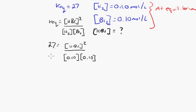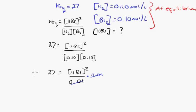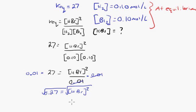We put in 27, so now this is a mathematical equation and we use a little algebra. We get HBr squared over 0.1 times 0.1, which equals 0.01. To solve, multiply both sides by 0.01 — those cancel out — so 27 times 0.01 gives 0.27 equals HBr squared. Then square root both sides, and you get an HBr concentration at equilibrium of 0.52 moles per liter.